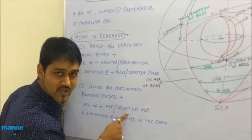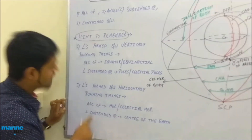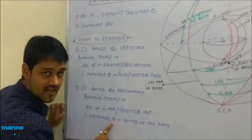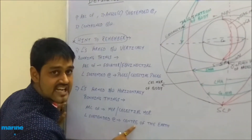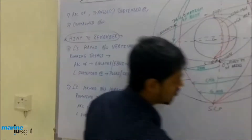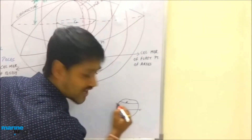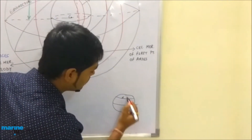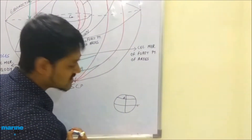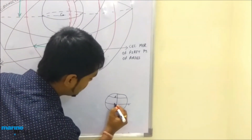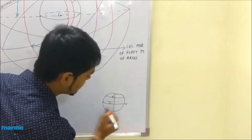Similarly, the second point is 'angle subtended.' In this case, the angle is subtended at the center of the earth. This is the parallel of latitude and this is the meridian passing through it, with the center of the earth indicated here.